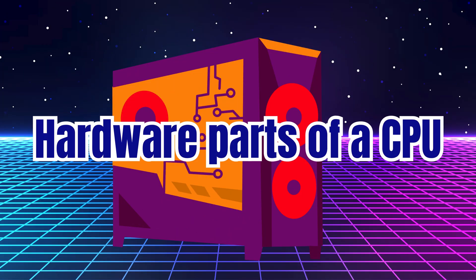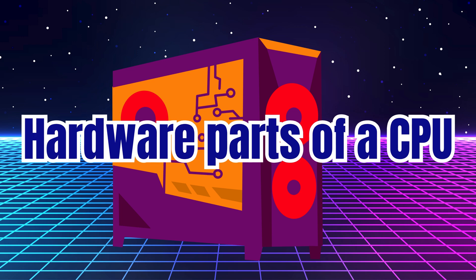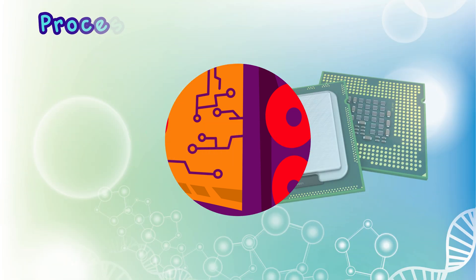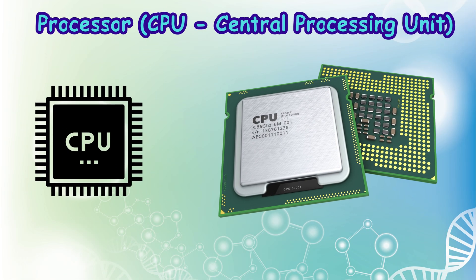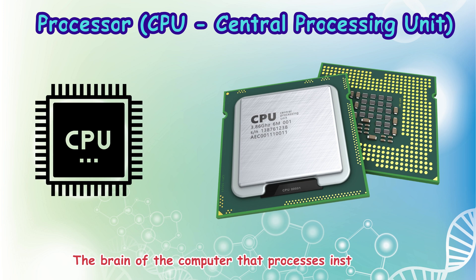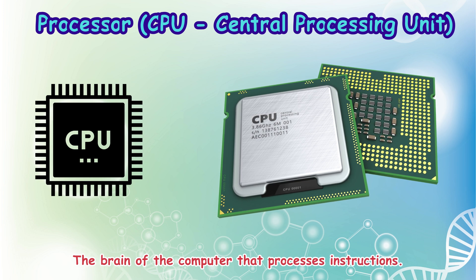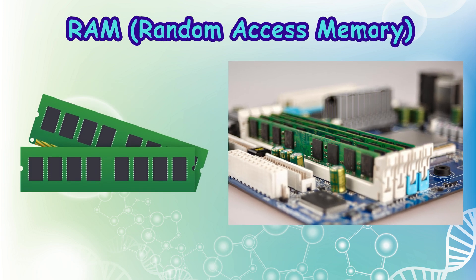Hardware parts of a CPU processor. CPU — Central Processing Unit — the brain of the computer that processes instructions. RAM — Random Access Memory — temporary memory that helps the computer run programs quickly.